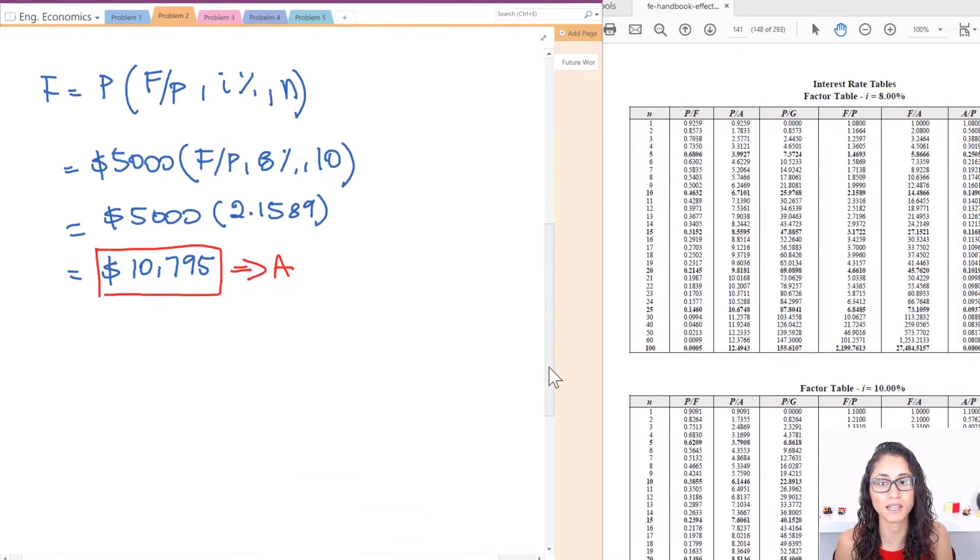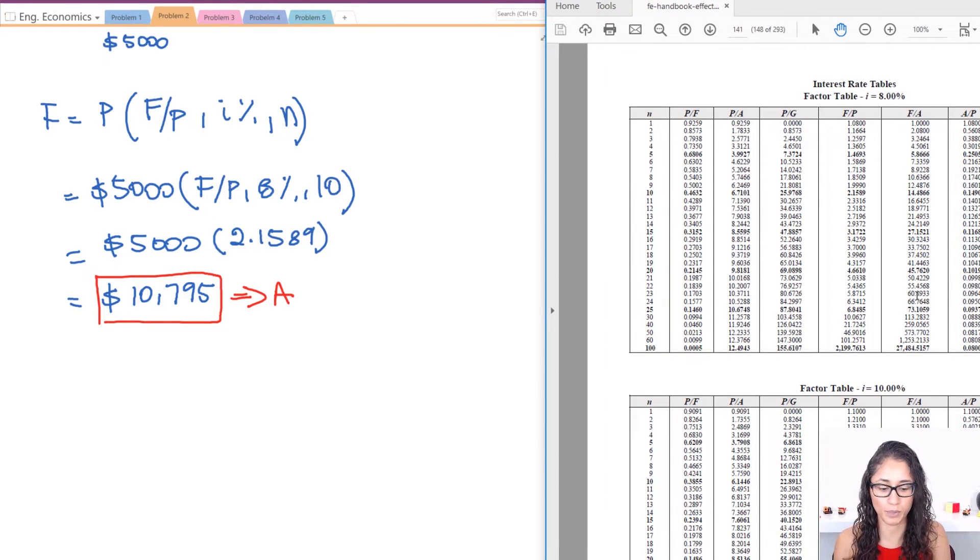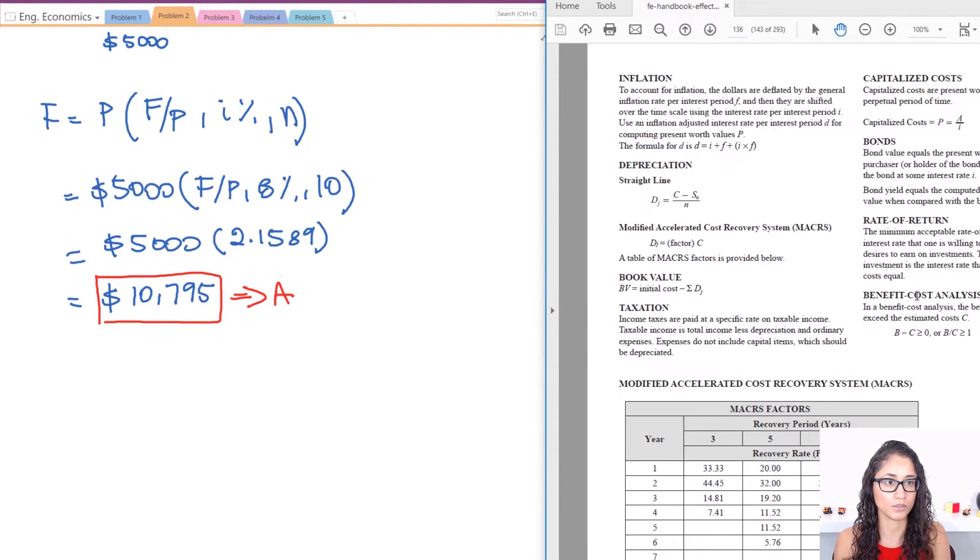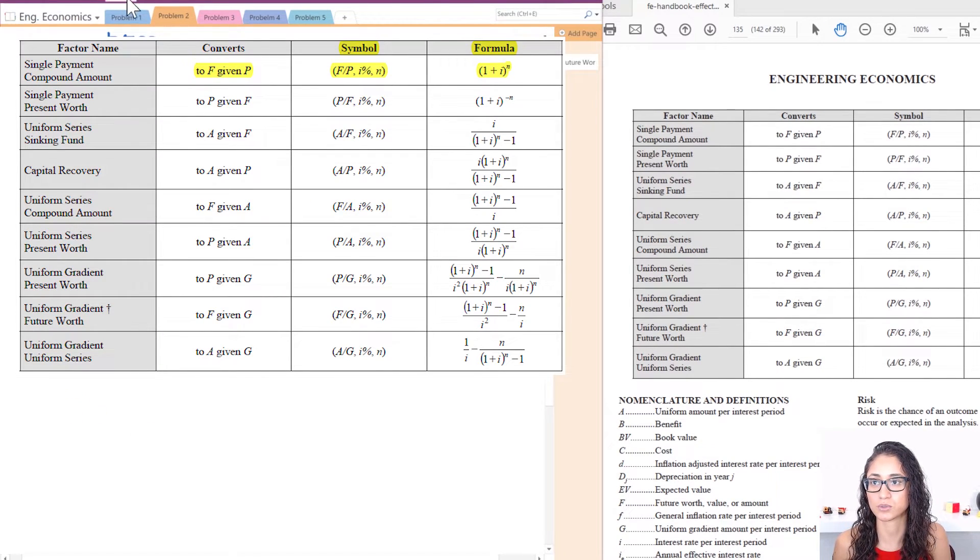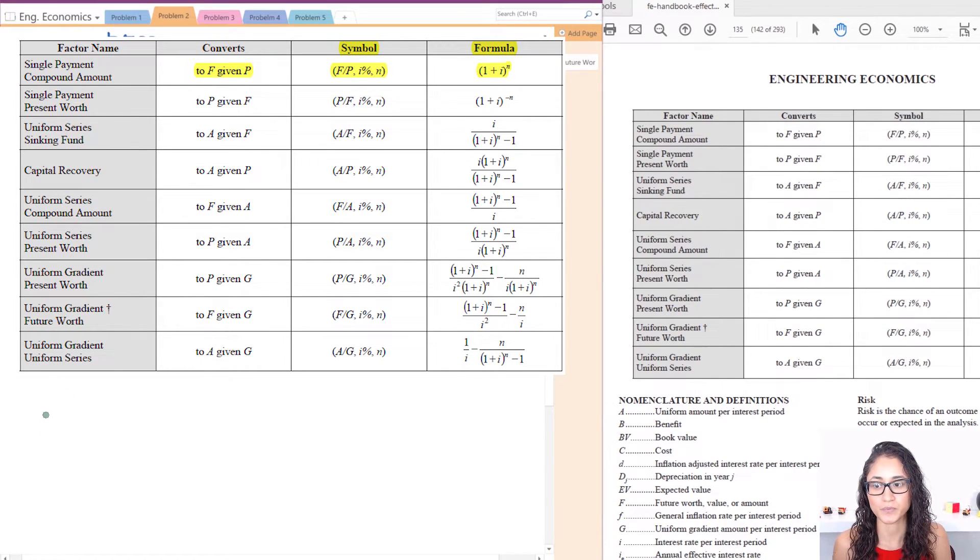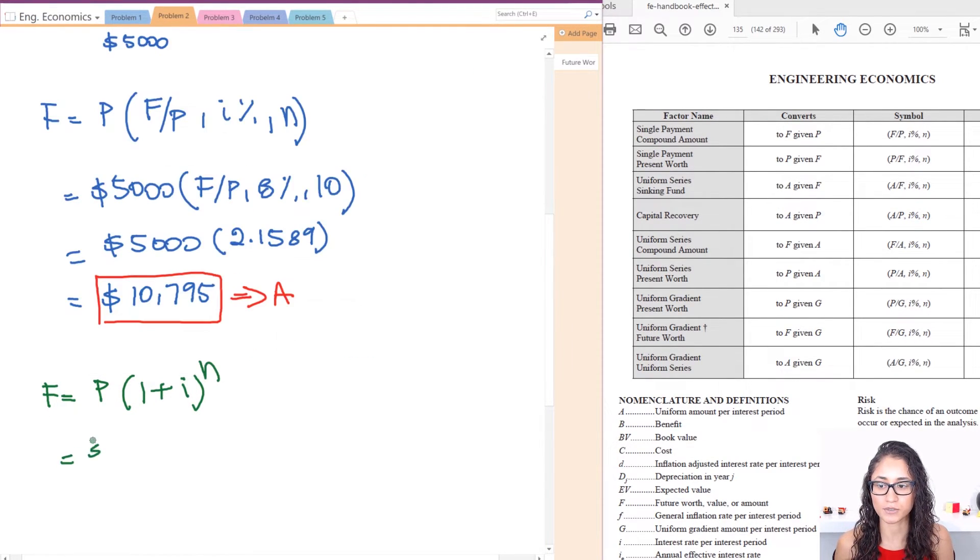Okay so let's now use the second equation. Let's go back to our page 135. So let's write it down. Let's do a different color this time, let's do green. So I have F is equal to P times (1 + i) to the n. P is 5,000, 1 plus i, so i is 8% but make sure you divide it by 100. Now n is 10. So the answer is very close, so it's 10,795. It's very close to this one.